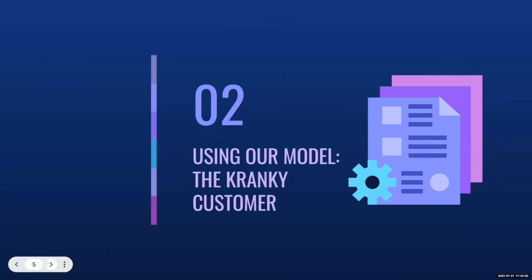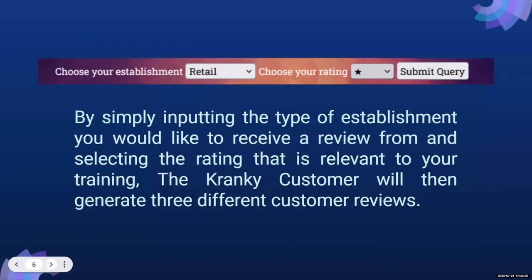As far as using our Cranky Customer model, you simply input the establishment you want — choosing between restaurant, fast food, or travel — then choose your rating of one, two, or three stars, submit a query, and you get your output of the different review types.